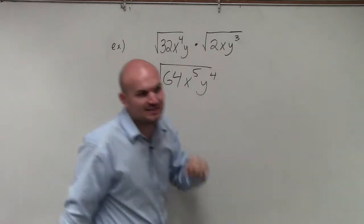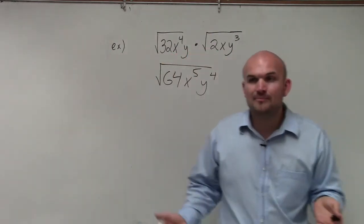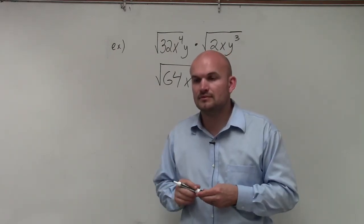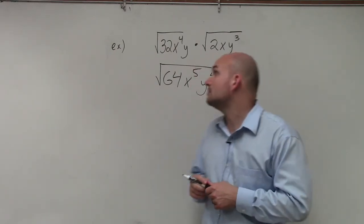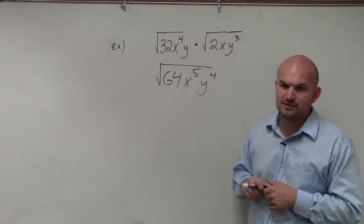Now, you could have simplified these radical expressions separately. I got 4x, 3x, 4x. You got what? Oh, you simplified them first? Yeah, 64.